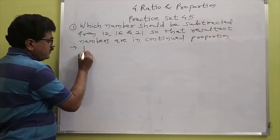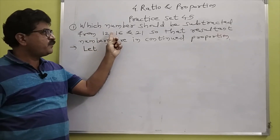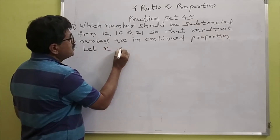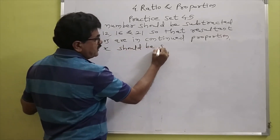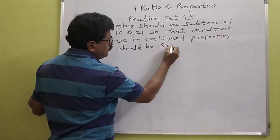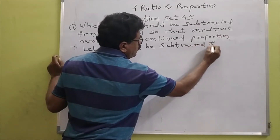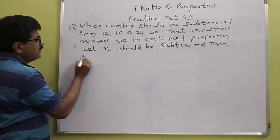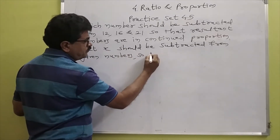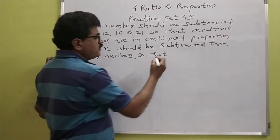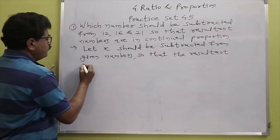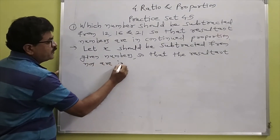First, we consider: let X be subtracted from the given numbers so that the resultant numbers are in continued proportion.